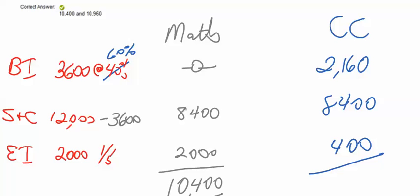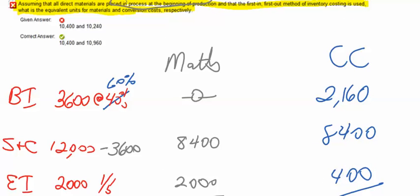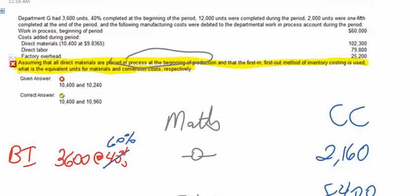Now, if I add those together, I'm going to get 10,960. So, my conversion costs are going to be 10,960, and the materials is 10,400. So, the correct answer, in this case, is 10,400 and 10,960.